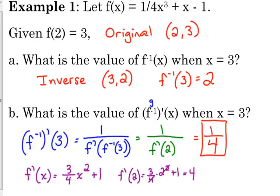So the value of the derivative of the inverse when x equals 3 is 1 fourth. We would not have been able to do that without this formula because we would not have been able to find an equation for the inverse to take the derivative from. This is just something you've got to memorize. There may be one question on the AP exam that has this — they don't test this very heavily, but it may show up.